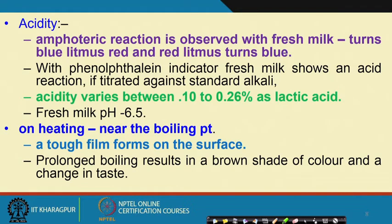Acidity varies between 0.1 to 0.26 percent in terms of lactic acid. As we progress in this subject we will see there are various reasons why acidity goes up. But generally, freshly drawn milk has acidity to the tune of 0.1 to 0.26 percent expressed as lactic acid.